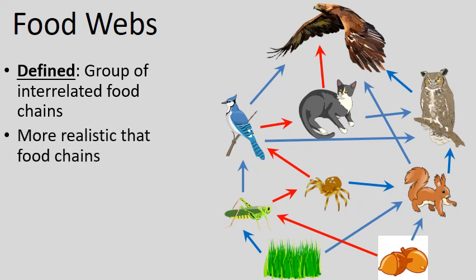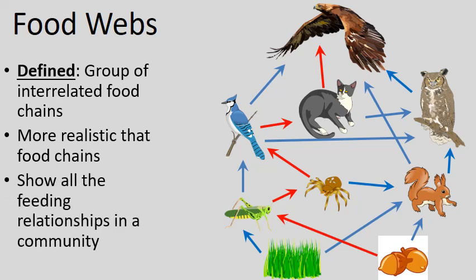Food webs are more realistic than food chains because they show all the feeding relationships in a community, not just one single pathway. In reality, animals may feed upon many different kinds of prey, not just one as depicted in a food chain.